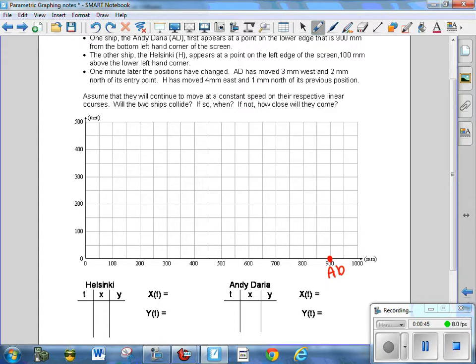The other ship, the Helsinki H, appears at a point on the left edge of the screen 100 millimeters above the lower left-hand corner. So that would be over here, a little red dot. Actually, I think I'm going to use blue because I think it's going to show up on my graph as different colors. So Helsinki is in blue.